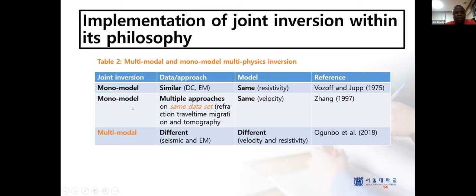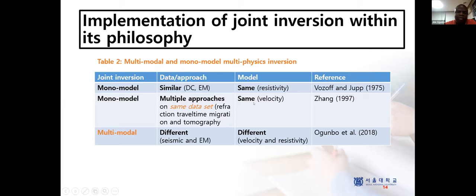Another type of mono-modal joint inversion is when you combine multiple approaches on the same data set — analyzing the data from different angles. It's like using MT — you use the phase data, and also look at the real component and the imaginary component. On the same data, you're trying to view it in different directions. John 1997 used refraction travel time migration and tomographic inversion on the same data, expecting velocity from both approaches — still a mono-modal target.